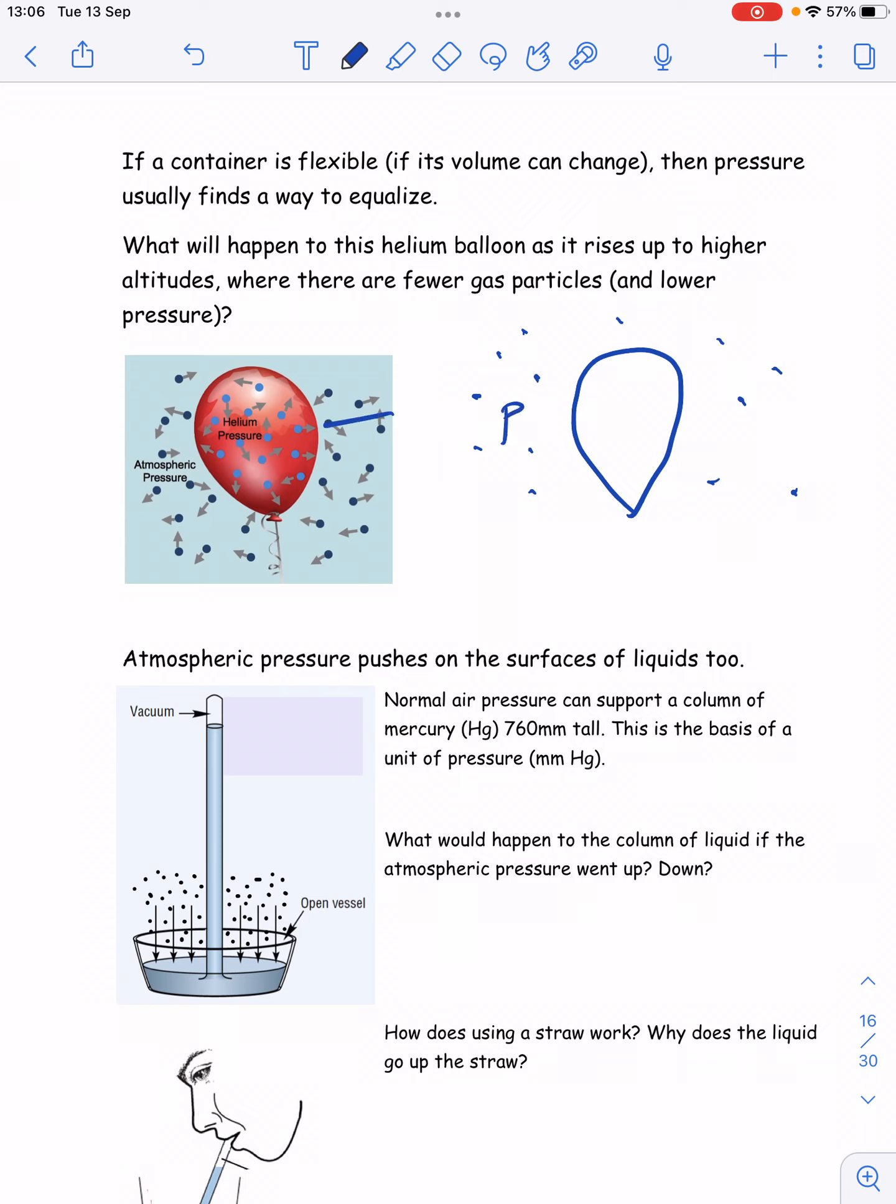So if the pressure here can be represented by these arrows of this size pushing in on the balloon, when the balloon rises up to smaller pressures, so higher altitudes, fewer gas particles, less collisions, less pressure, the arrows shrink.